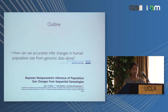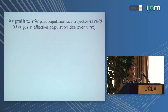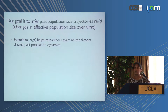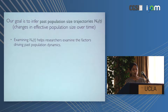The goal of this work is to infer a past population size trajectory, or effective population size as a function of time. Effective population size in an idealized population with constant size and random mating corresponds to the census population size, but generally it's a little lower. Examining changes in this as a function of time helps researchers understand factors influencing population dynamics — such as how a population responds to a dramatic climate change, an influx of migrants during conquest, or the arrival of a new pathogen.